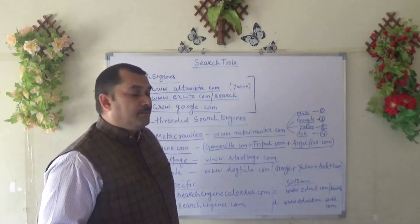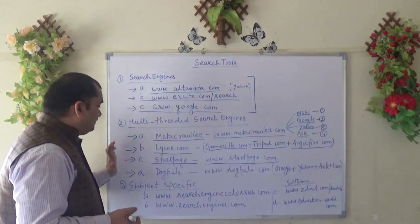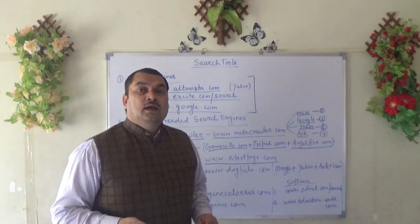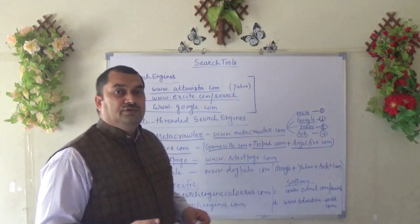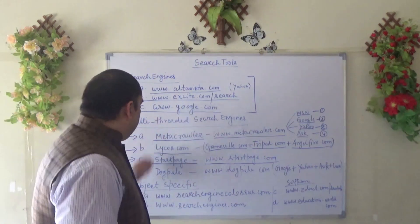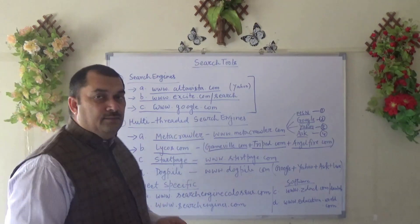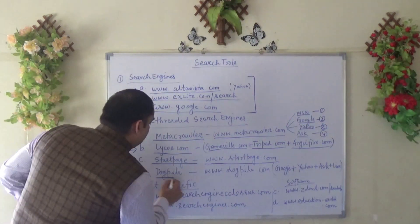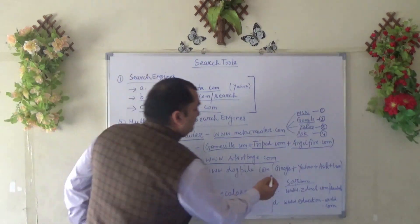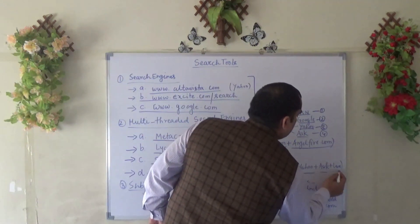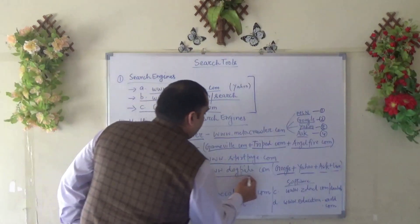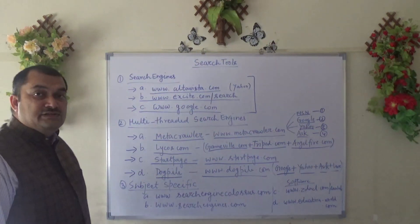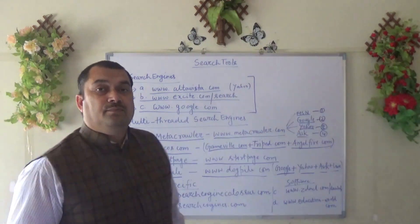I have taken only four meta search engines, and I think for a library professional or any professional looking for information, these four will help a lot in retrieving information. The last one is DogPile, which is a combination of Google, Yahoo, Ask, and Live. The website is dogpile.com. So these are the four meta search engines which can help retrieve information from the internet.